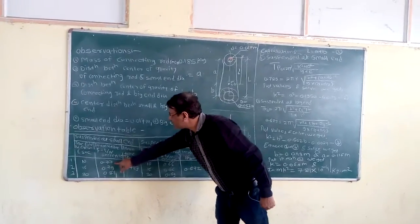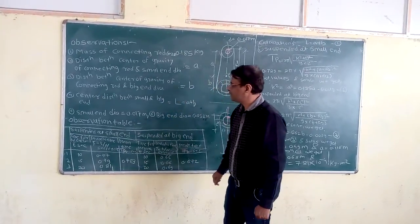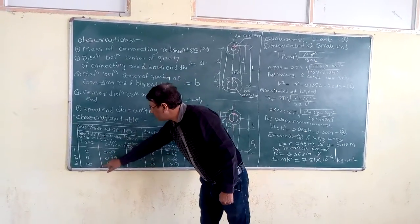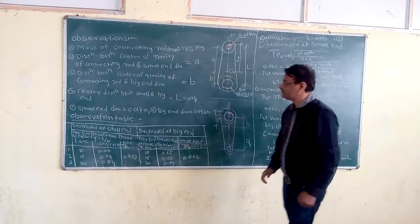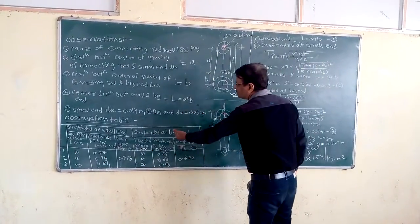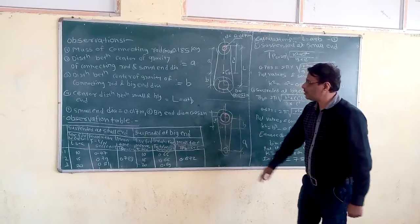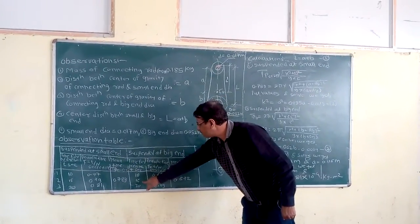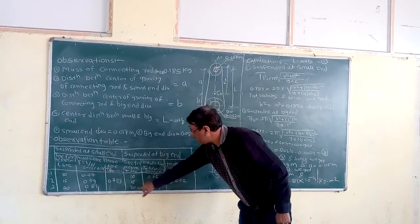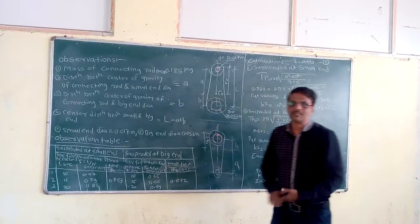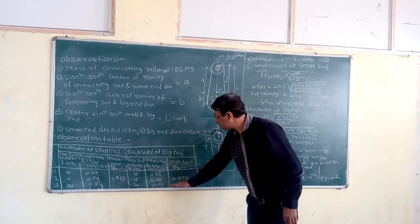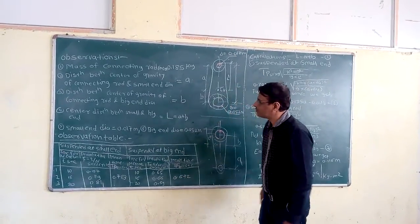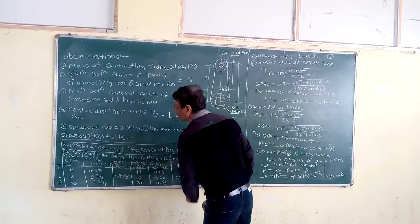Observe that time for 10 cycles is 0.77 seconds, time for 15 cycles is 0.79 seconds, and time for 20 cycles is 0.81 seconds. The mean of these three observations is taken and observed to be 0.78 seconds from the small end suspension.